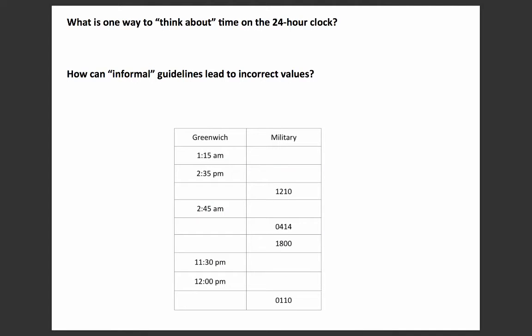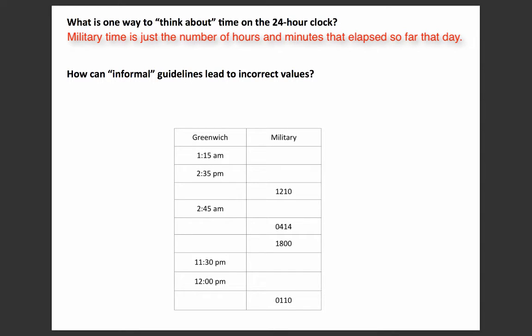One way to think about time on the 24-hour clock is to think about the number of hours that have elapsed so far that day. For example, if it's 4 a.m., think about how many hours have actually elapsed. The day starts at 12 a.m., so at 4 a.m. only four hours have passed. Military time can be thought of as the total number of hours and minutes that have passed so far in that new day.